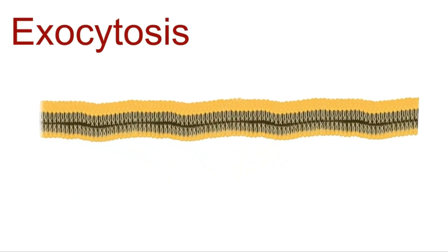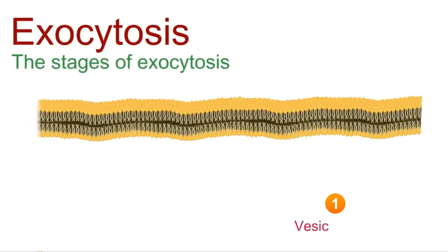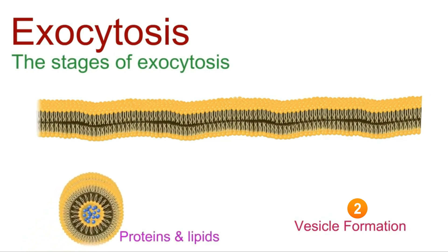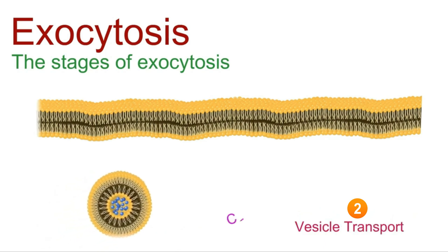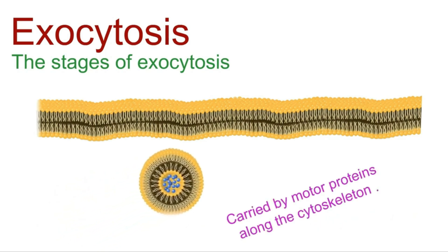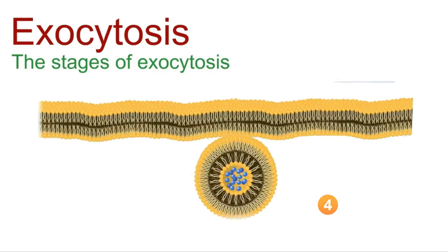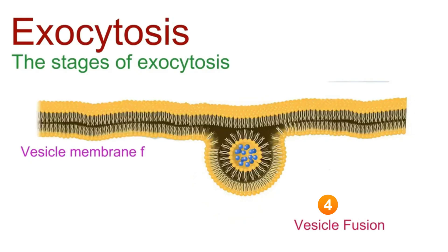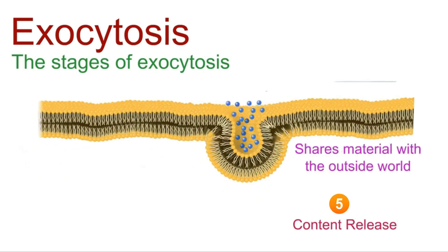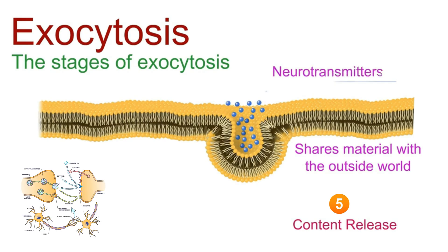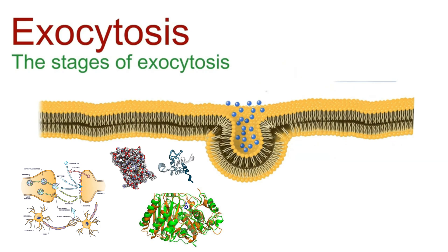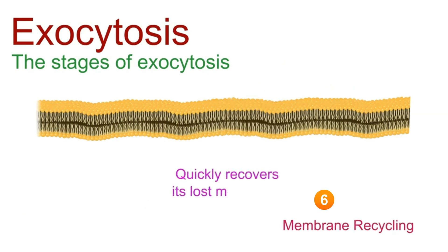Exocytosis happens in several stages, just like a well-choreographed dance. Our delivery trucks, or secretory vesicles, are loaded with goodies like proteins and lipids. They cruise through the city streets, carried by special motor proteins along the cytoskeleton roads. The vesicles park at their designated spots, getting ready to make their special deliveries. The vesicle membrane fuses with the cell membrane, releasing its contents outside. The cell shares its cargo with the outside world — neurotransmitters, hormones, or enzymes. The cell then quickly recovers its lost membrane through endocytosis, ensuring everything stays in balance.